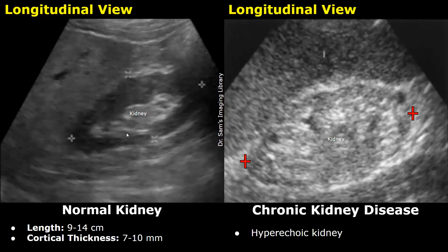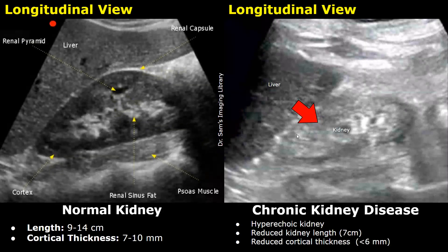In chronic kidney disease, the kidney will appear hyperechoic — we see a very bright hyperechoic kidney. The hyperechoic kidney also has a reduced length; it will appear smaller than normal, and the cortical thickness will be less than 6 millimeters.